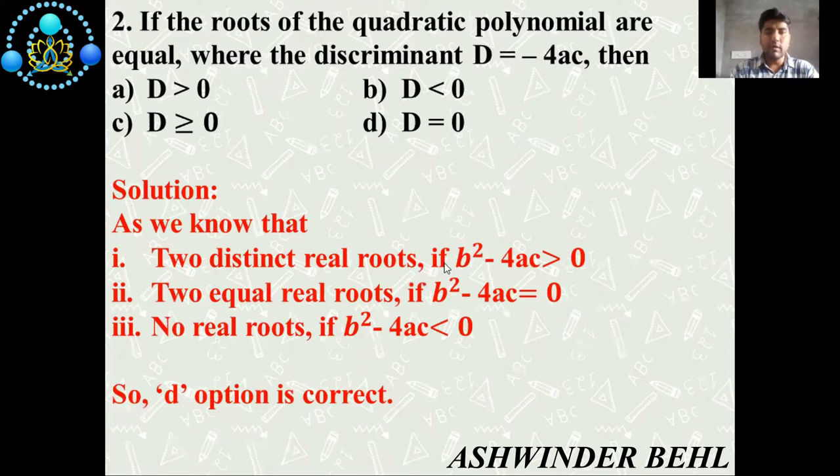As we know that two distinct real roots if b² - 4ac greater than 0, two equal real roots if b² - 4ac is equal to 0, no real roots if b² - 4ac less than 0. So D option is correct.